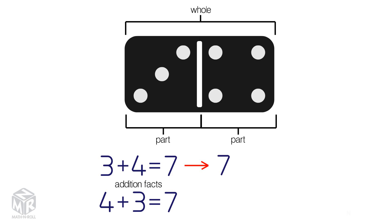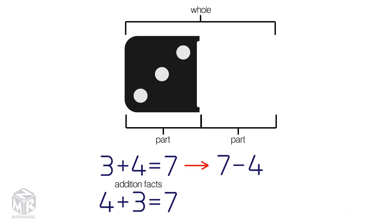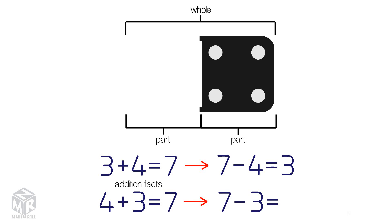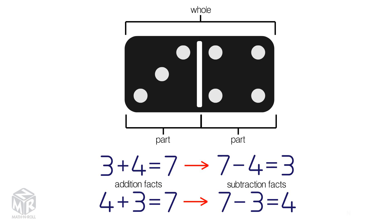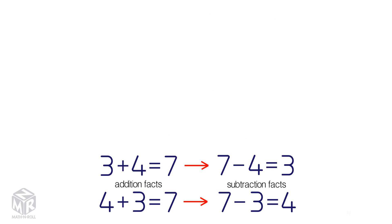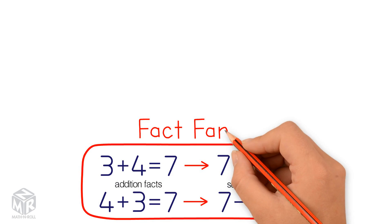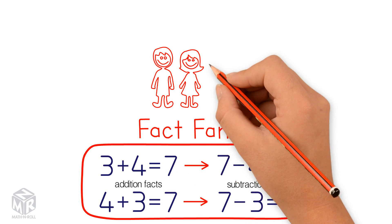7 minus 4 equals 3 and 7 minus 3 equals 4. These are the subtraction facts. For each set of three different numbers, you can create two addition and two subtraction number facts that are related. We call these four number facts a fact family, since they're related kind of like members of a family.